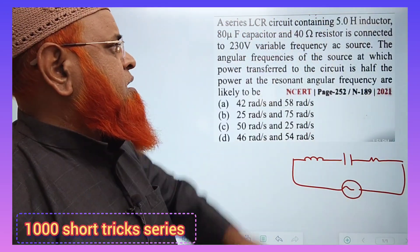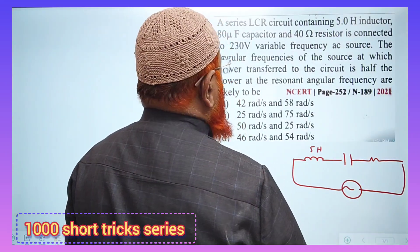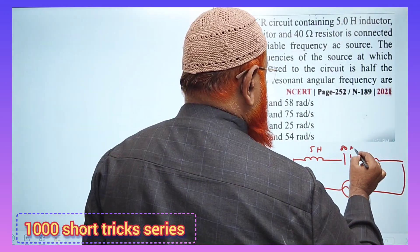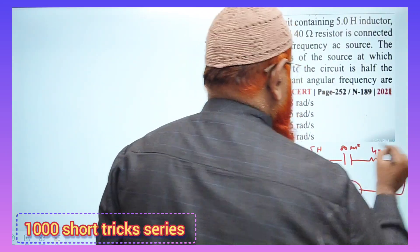So you can just see what are the values given here. It is given that it is going to be 5 Henrys and capacitance is going to be 80 micro Farads and resistance is going to be 40 Ohms. It is given in this problem. Isn't it?